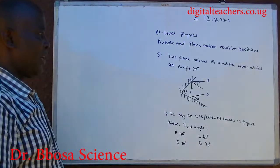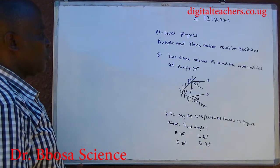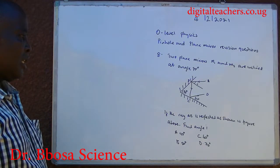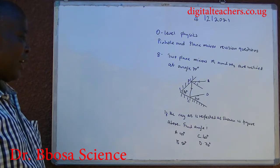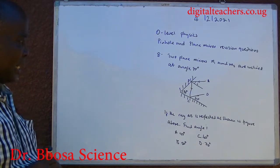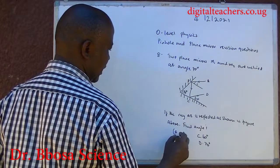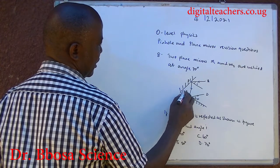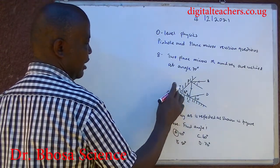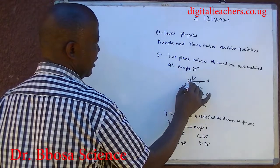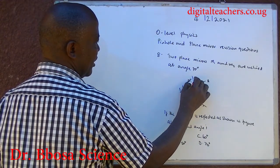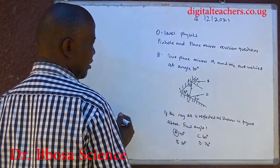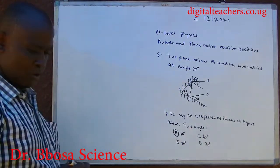Number eight: two mirrors M1 and M2 are inclined at an angle of 70°. If the ray AB is reflected as shown above, find angle I. You can pause and answer. The answer is A. The glancing angle here is 60°. 60 plus 70 is 130. The angle sum of a triangle is 180, so this angle is 50°. 50 plus I equals 90, so I is 40°.